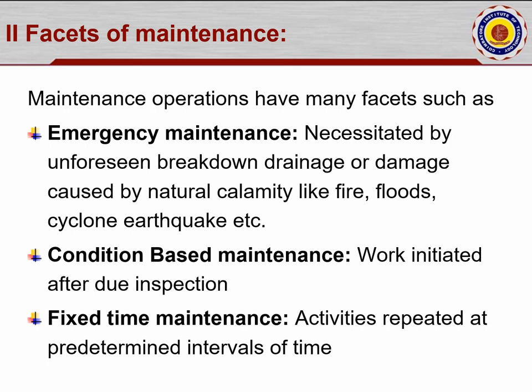Number 1 is Emergency Maintenance — necessitated by unforeseen breakdown, drainage, or damage caused by natural calamity like fire, floods, cyclones, earthquake, etc. For example, in the Tamil Nadu government, we have a department named the Tamil Nadu Water Supply and Drainage Board. If there is any breakage in pipes used to supply water, there is no need to go through contractor procurement. Immediately we can call a contractor or a licensed plumber to carry out the work, and the bill will get sanctioned without any court procedures. That is Emergency Maintenance.